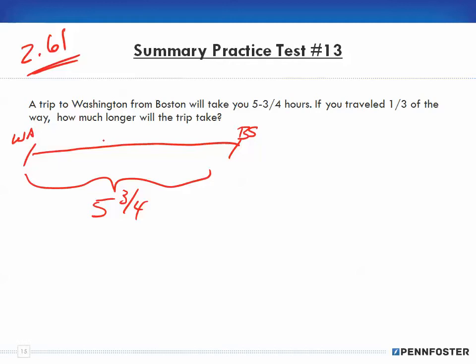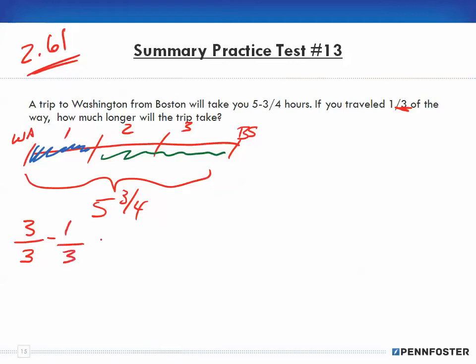If I've traveled one-third of the way, I subtract that from the whole trip — three-thirds minus one-third leaves two-thirds still to go. So to find how much longer the trip takes, I multiply the total trip time of five and three-quarters by two-thirds. I convert the mixed number: four times five is 20, plus three is 23 over four, times two over three. I can cancel: two and four — two goes into two once, two goes into four twice. That gives me 23 times one is 23, and two times three is six.